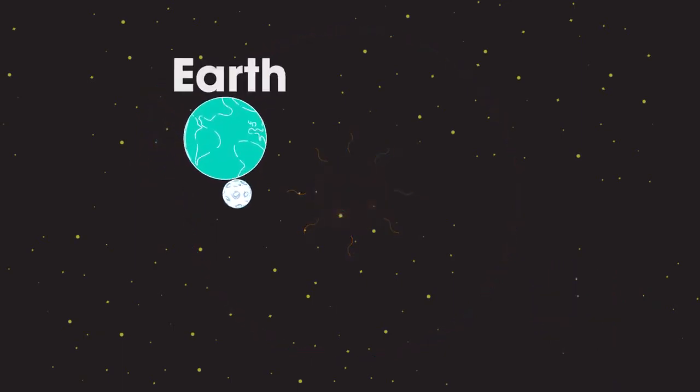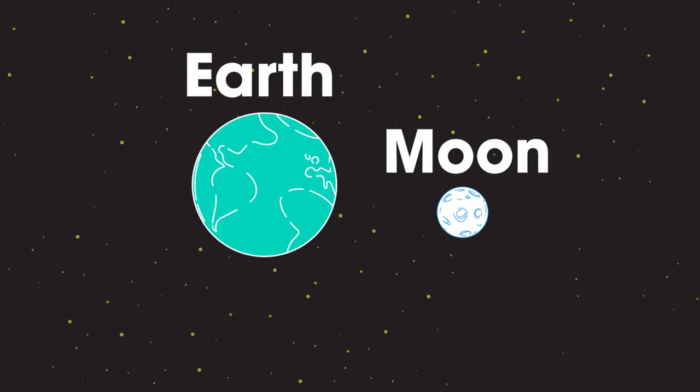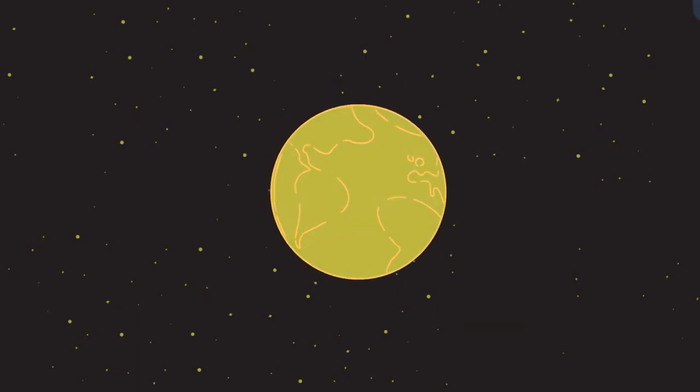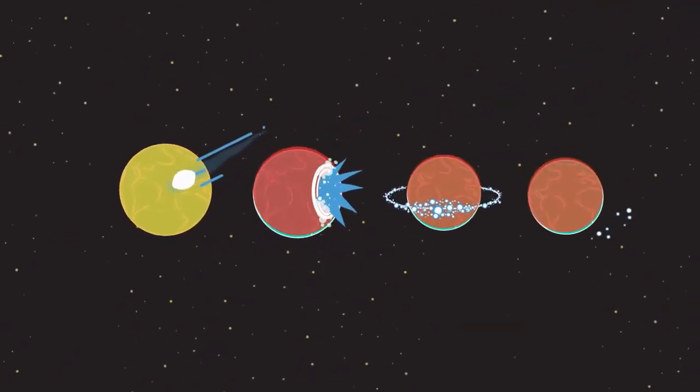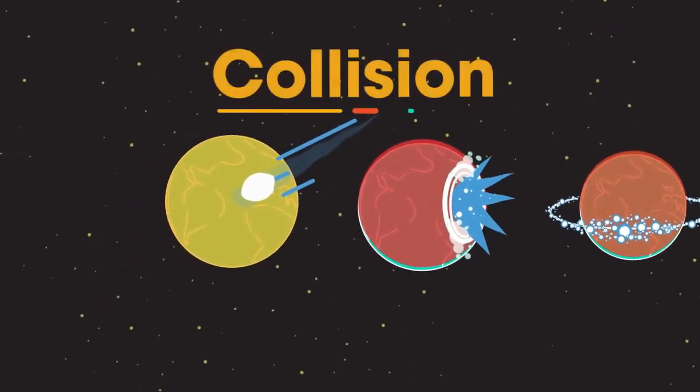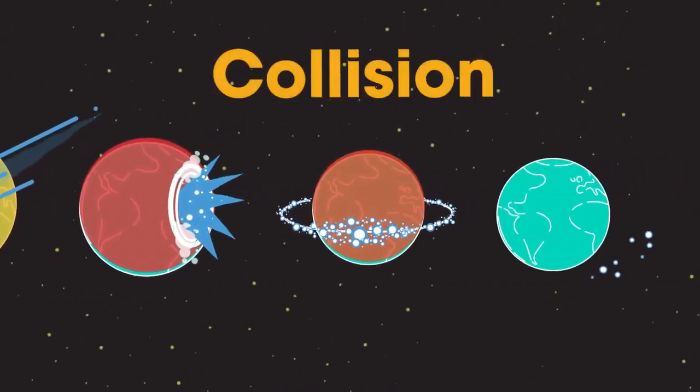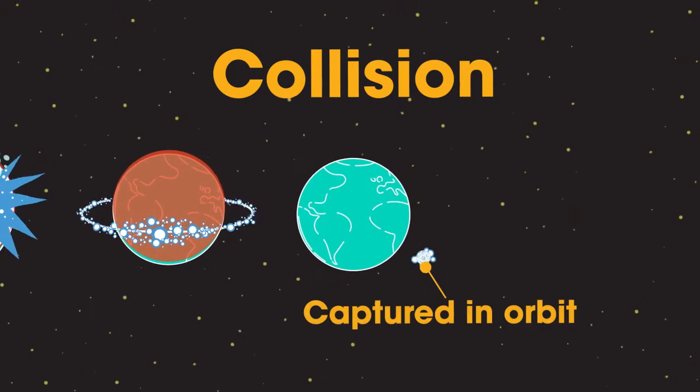Earth is unusual, as our moon, the moon, is large when compared to the planet it orbits. It is thought that the moon was created very early on in the life of the Earth, after a significant interplanetary collision which ejected rock which was then captured in orbit.